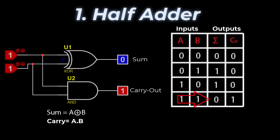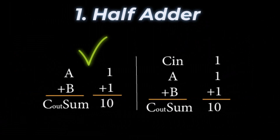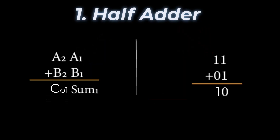Because a half adder can only add two binary digits, it cannot be used as part of an adder circuit that adds three or more binary numbers. It can only add single-bit binary values. In multi-bit data, we have to add the carry out of the previous bit to the next bit as carry in.